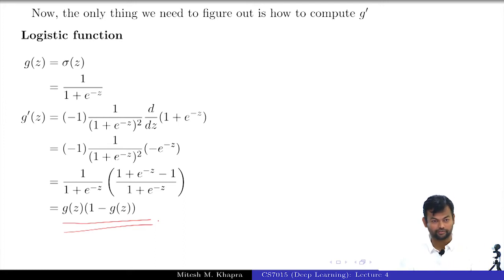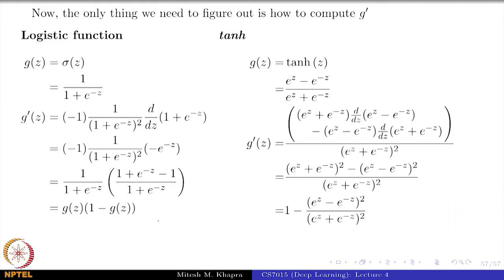So now, that bit is also taken care of. Is there any more spoon feeding that I can do? You are ready for the assignment now? Okay, I will do one more bit. You will also have to use the tanh function. This is the derivative of the tanh function. It again boils down to a very neat formula which is 1 minus g of z the whole square.